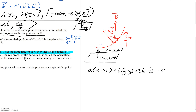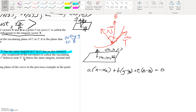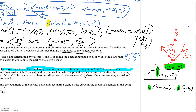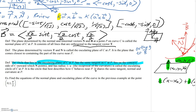When writing the equation of a plane, you need a point and the normal vector components a, b, c in front of x minus x-naught, y minus y-naught, z minus z-naught, all set equal to zero. So for the normal plane, the tangent vector T provides your a, b, c components.